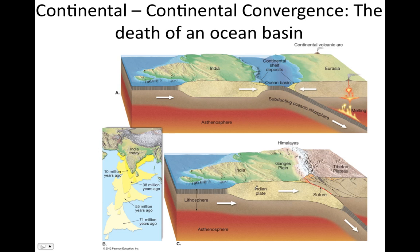The plate attached to the subducting oceanic lithosphere gets pulled underneath the other plate, but because it's too buoyant to sink it just slides underneath — like two rafts in a pool being pushed together where one slides under the other. As a result, the Indian plate sliding underneath the Eurasian plate pushes it up, producing a region of high elevation: the Tibetan Plateau.